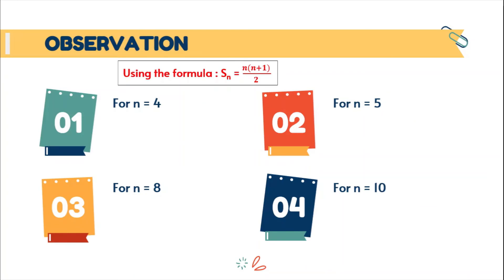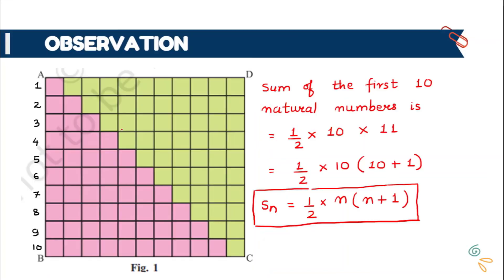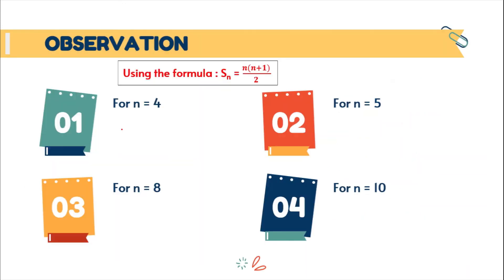Let us find the sum of first 4 natural numbers or 5, 8 and 10 using this formula. And you can also cross check your result by looking at the number of squares which we have already drawn in the previous figure, these square boxes in pink color.